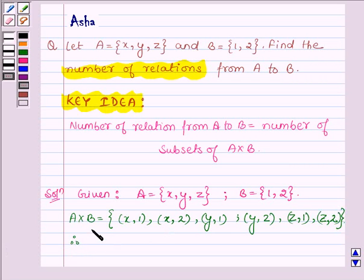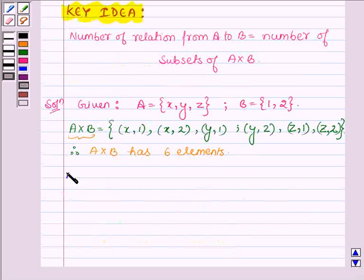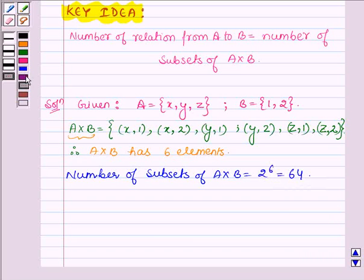So, we have 6 members in the Cartesian product. Therefore, number of subsets of A cross B will be 2 raised to the power 6 which is equal to 64. And we know that number of subsets of A cross B is equal to the number of relations from A to B. Therefore, number of relations from A to B is equal to 64.